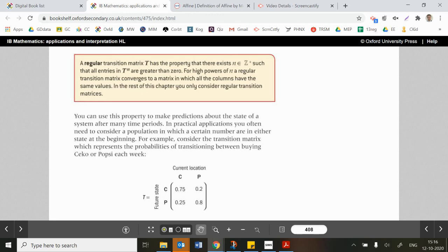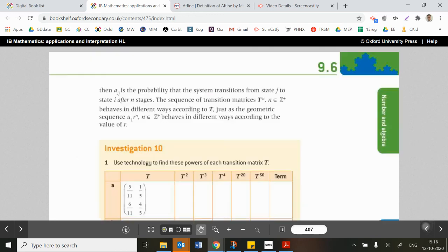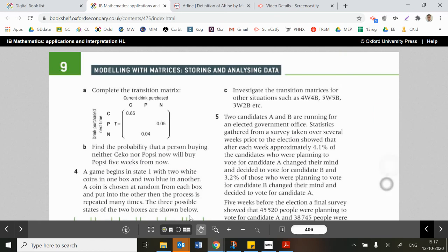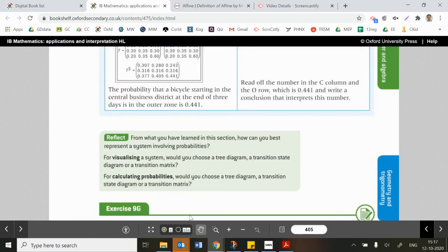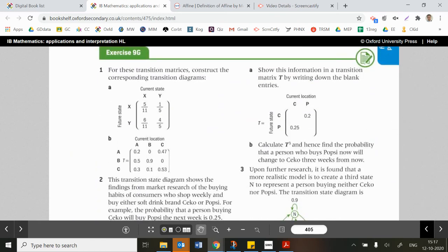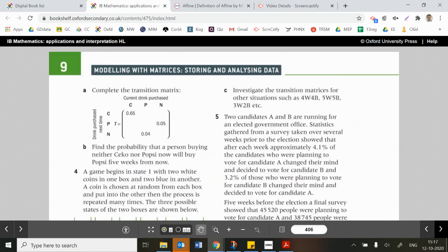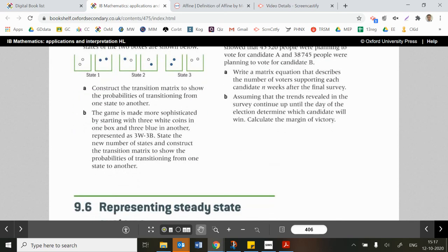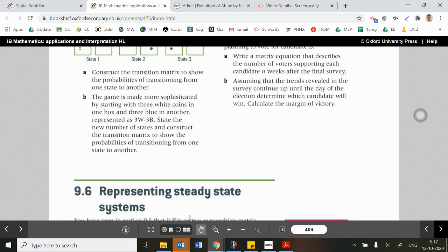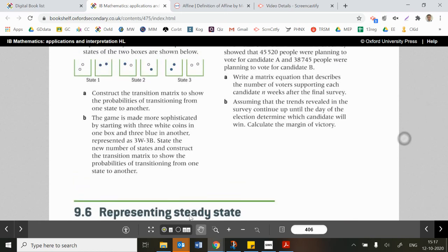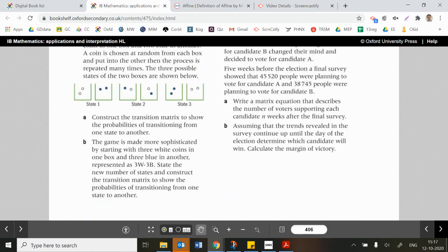And that always happens, by the way, if you have essentially the same column every time over in your matrix. Whatever's in the first column, you'll find in the second and the third, for example. Well, pretty much done 9H there, but obviously, have a go at the exercise in 9G first. So there we go. This one here. This one here, and there are five questions there, and then we're talking about steady state systems in the next one. Thanks for listening, guys. Good luck with the exercise, and hope to see you for the next one.